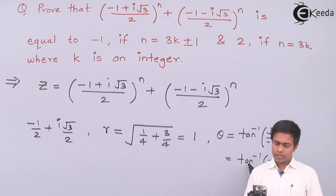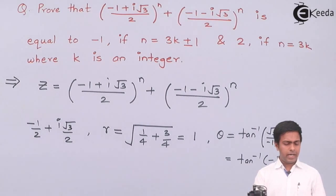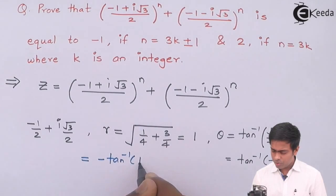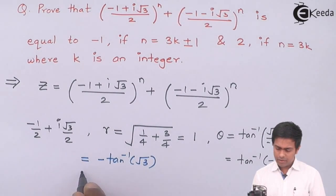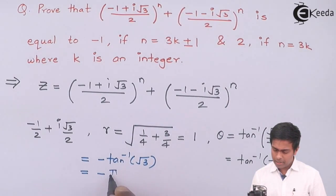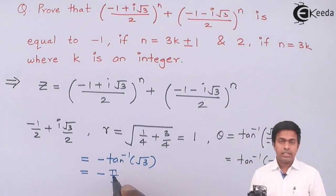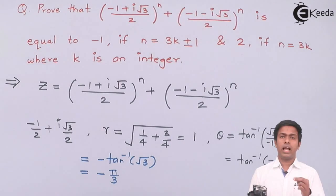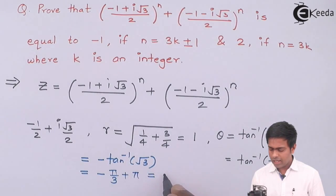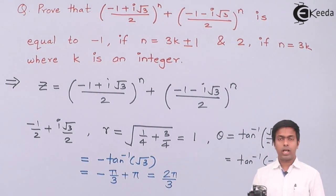To solve tan⁻¹(-√3), we write it as -tan⁻¹(√3) = -π/3. Since -π/3 lies in the fourth quadrant but we need the angle in the second quadrant, we add π, giving θ = -π/3 + π = 2π/3. So for the first complex number, r = 1 and θ = 2π/3.